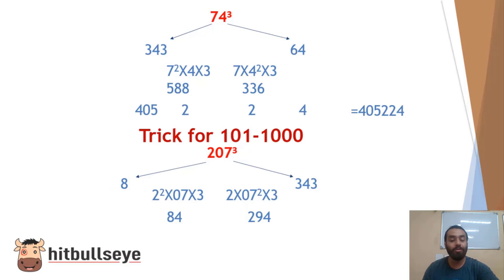So when I talk about 343, 43 will be copied down, 3 will be carried over. 294: 3 carry over gives 97, 2 carry over. 84 becomes 86 and our last number as it is copy. And this is your final answer, 8869743. This is your final answer for 207 cube. Wasn't this pretty simple?